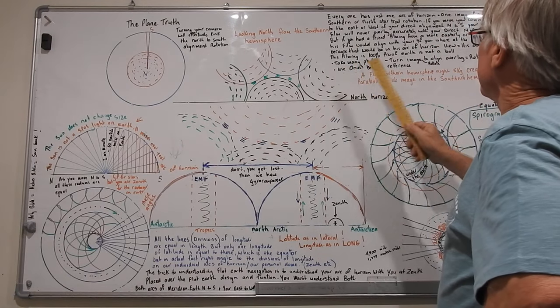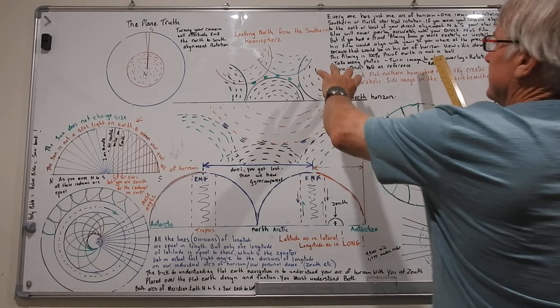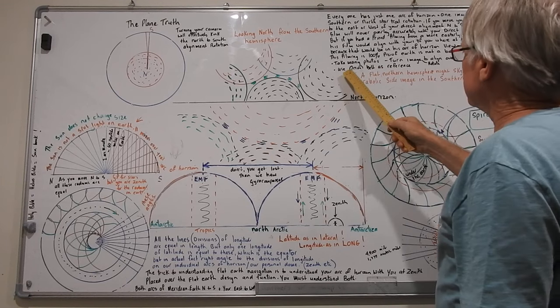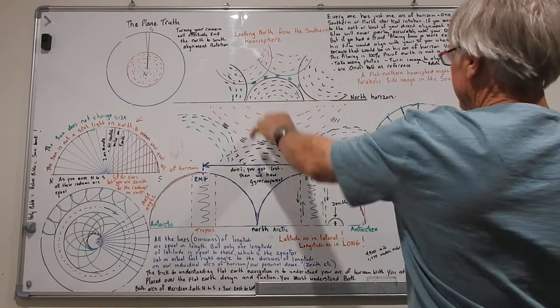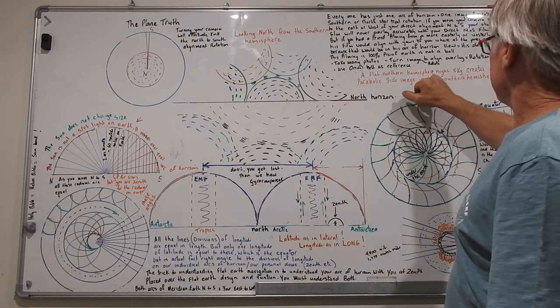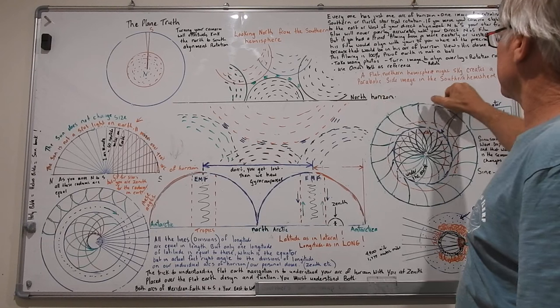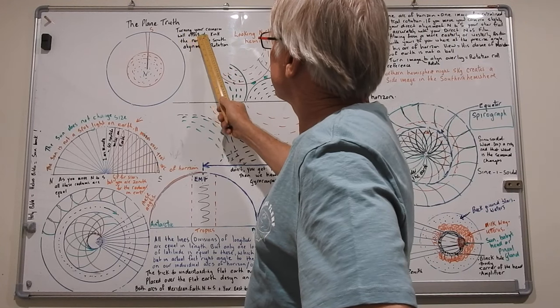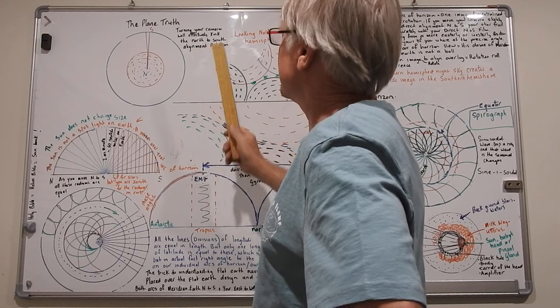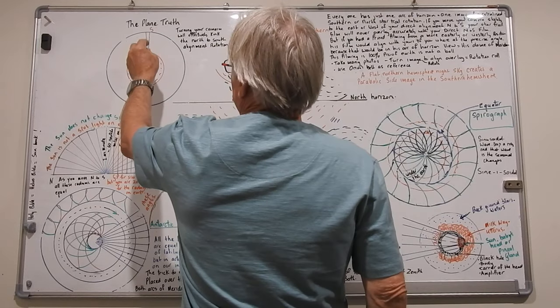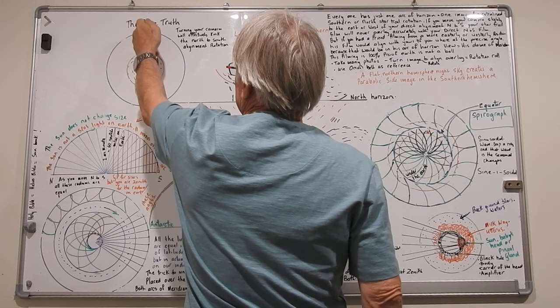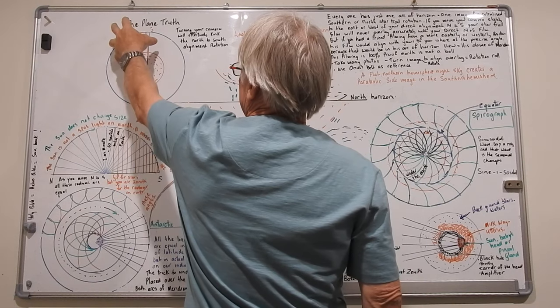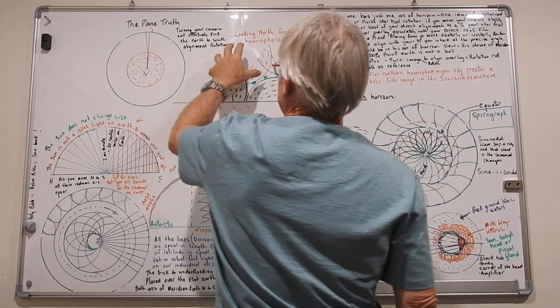So lots of photos right, and then turn the images or rotate them to overlap if they're just photos. Use Orion's belt as a reference which is good this time of the year. A flat northern hemisphere night sky creates a parabolic side image. So turning your camera will effectively kink the north to south alignment rotation. You're only ever going to get one nice rotation if you look dead south, your film will capture something like this.